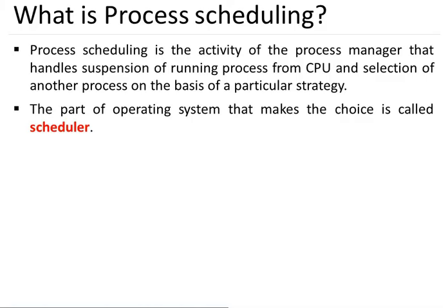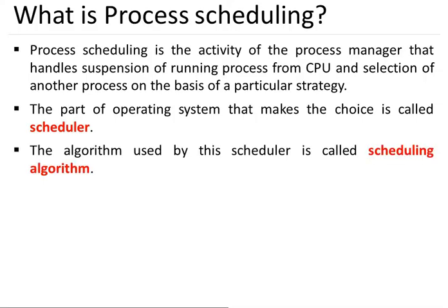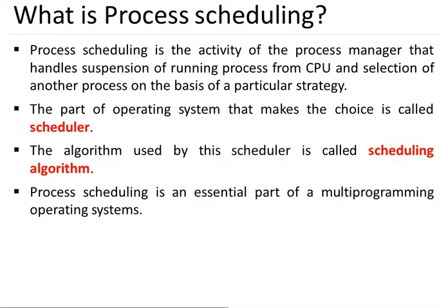Process scheduling is the part of the operating system that makes the choice of which process will be selected for further execution. There are certain strategies so that a particular process gets selected and gets CPU execution. The part of the OS that makes this choice is called the scheduler, and the algorithm used by the scheduler is called a scheduling algorithm. Process scheduling is an essential part of multi-programming in an operating system.